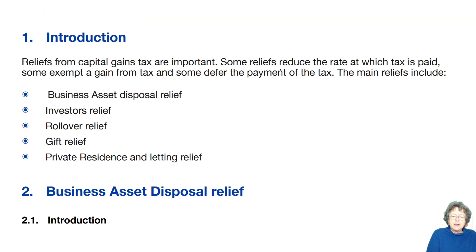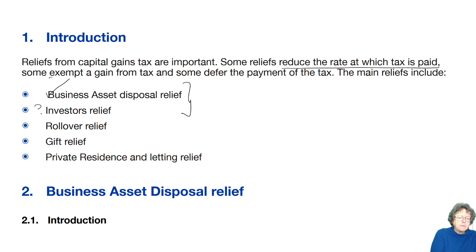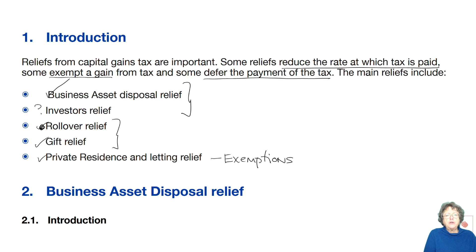Some of these reliefs reduce the rate at which the tax is paid. That's the one you are most likely to come across, and that's the one you are least likely to come across. Some are exempt — not all exempt, but there are exemptions. Some of them defer the payment of tax. One of those is very important because it's the only one available to limited companies. None of the others are available to limited companies, so if you get a company question with capital gains, it might have rollover in there.